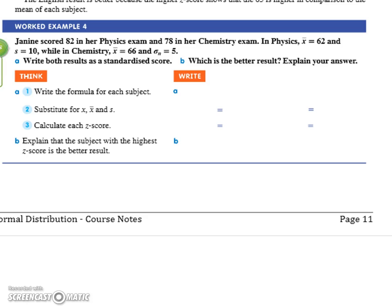I'll give you a hint, we've just been doing it. It's a z-score. They'll sometimes call it a standardized score. Go write the formula for each subject.